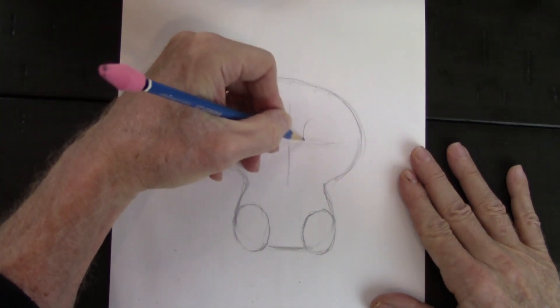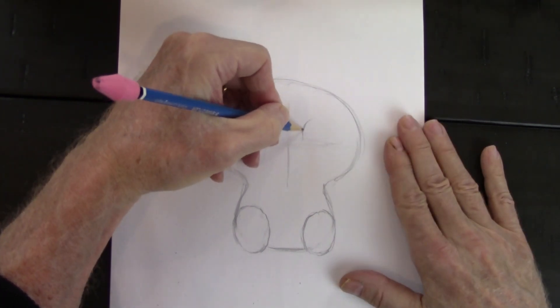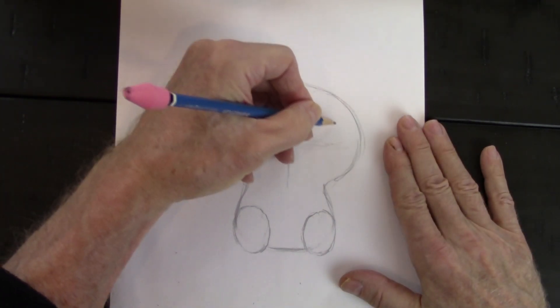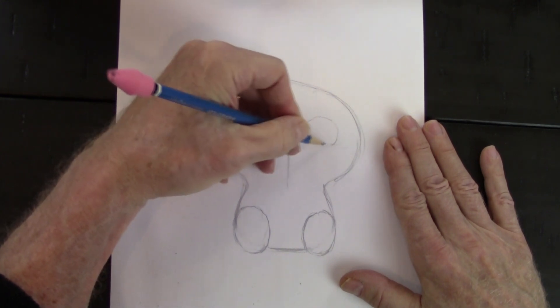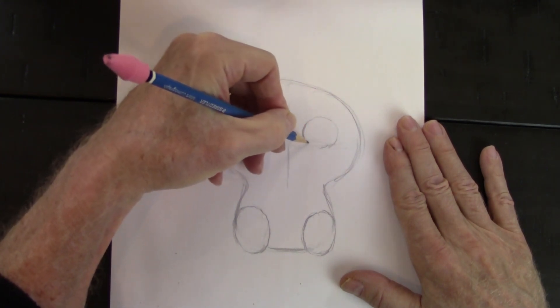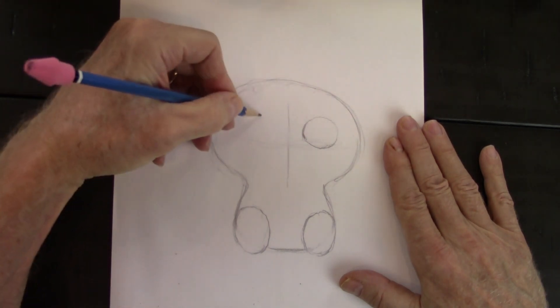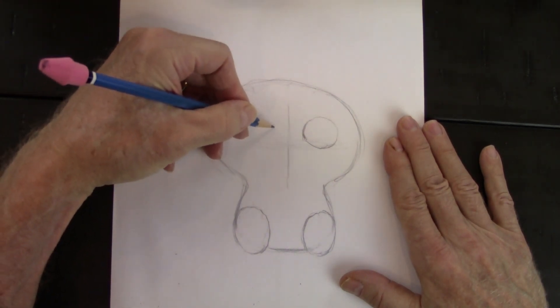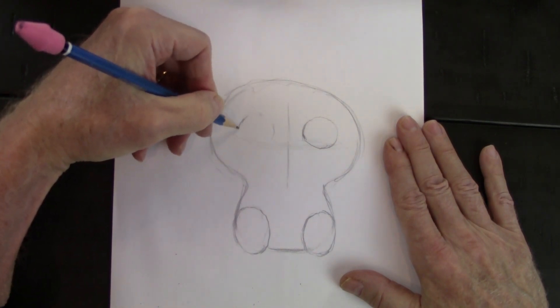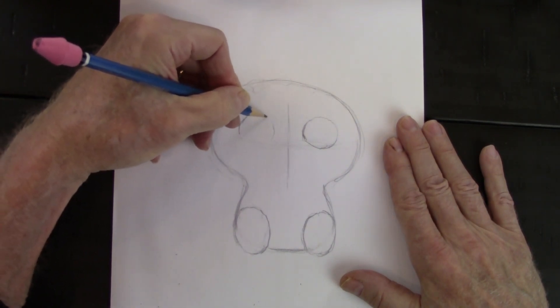Now give them nice and big eyes. We'll just go slowly here. And the same thing on the other side. On that eye line.